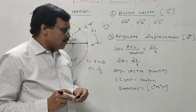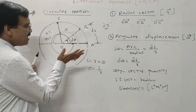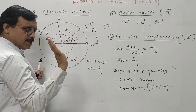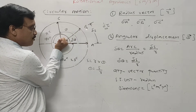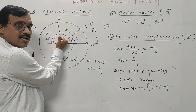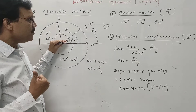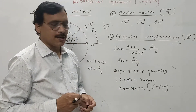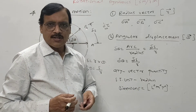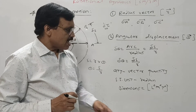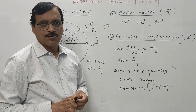Angular displacement is a vector quantity, and its direction is given by the right-hand thumb rule. Using the right hand, curling the fingers in the direction of circular motion, the outstretched thumb gives the direction of angular displacement. Its unit is radian and its dimensions are L0 M0 T raised to 0.